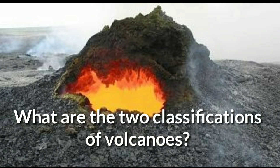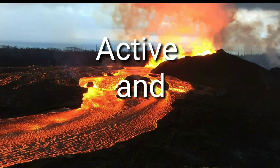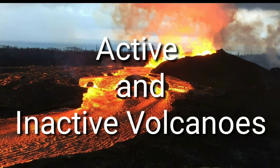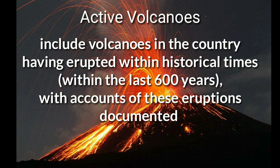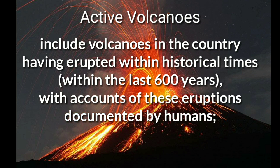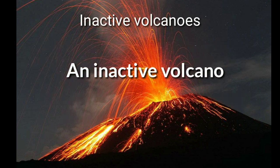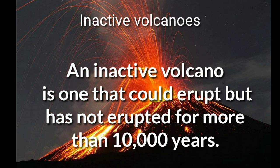What are the two classifications of volcanoes? The two classifications are active and inactive volcanoes. Active volcanoes include volcanoes that have erupted within historical times — within the last 600 years — with accounts of these eruptions documented by humans. An inactive volcano is one that could erupt but has not erupted for more than 10,000 years.